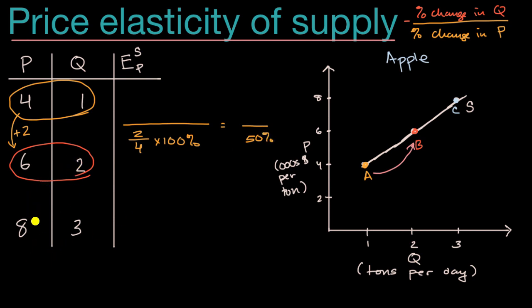And then what is going to be our percent change in quantity? Well we're going from one to two, so we're starting at a base of one. We are increasing by one. And then multiply that times 100%. That gives us 100%. So when we have a 50% increase in price, that resulted going from point A to point B in a 100% increase in quantity supplied. So 100% divided by 50%, that is going to give us, this is going to be equal to two.